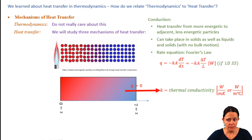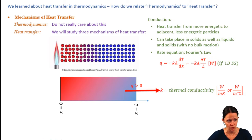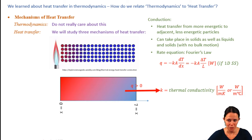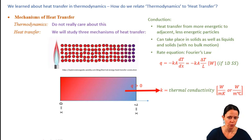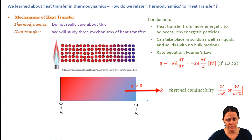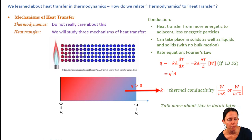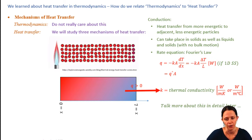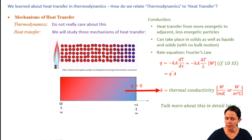If steady-state conditions have been reached and heat transfer is one-dimensional — meaning you only have a temperature gradient in one direction — you can simplify that temperature derivative. We can also express q in terms of heat flux, which is q double prime, with units of watts per meter squared. We'll talk about Fourier's law in more detail later, but that's it in a nutshell.